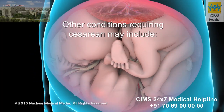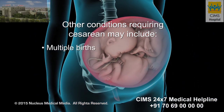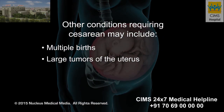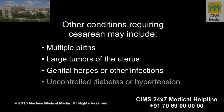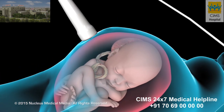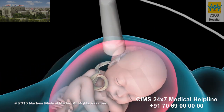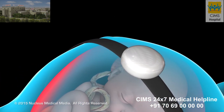Other conditions that may require a cesarean section include multiple births, large tumors of the uterus, genital herpes or other infections, or medical problems such as uncontrolled diabetes or hypertension. Your doctor may use ultrasound testing and a fetal heart monitor to help decide whether your baby should be delivered by cesarean.